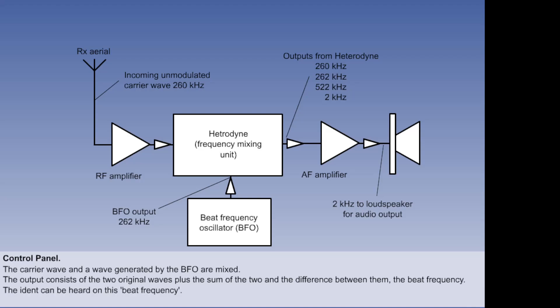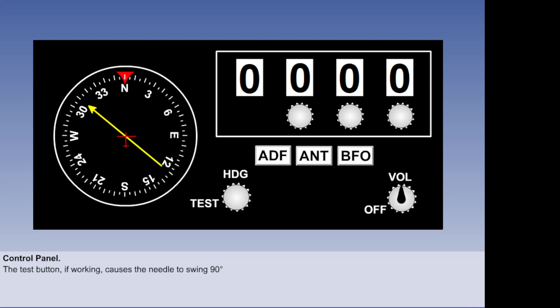On most modern aircraft, this BFO function is done automatically. Finally, the test button, when depressed and held, will swing the needle roughly 90 degrees to show that it works properly. Releasing the button sends the needle back to its bearing reading. Try it.